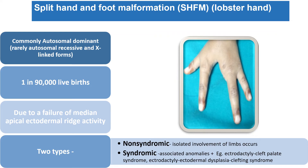In brief about this syndrome: it is mainly autosomal dominant, rarely it can be recessive or X-linked. The incidence is 1 in 90,000. It is due to the failure of median apical ectodermal ridge activity.